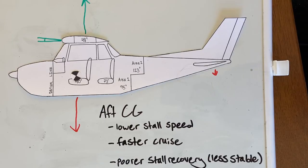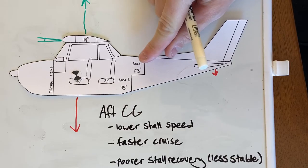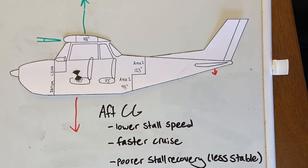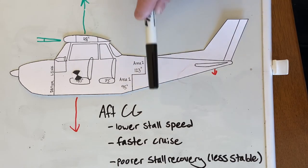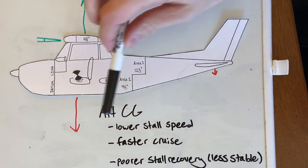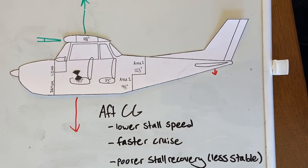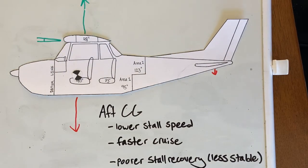As long as you keep the center of gravity within its limits, the airplane is still going to be stable — it's just not quite as stable as it would be with a further forward center of gravity. Having a far aft CG might be a little bit better because you are going to cruise a little bit faster, so it's a little bit more efficient, and the stall speed is lower. You just need to be aware that it won't recover from a stall quite as well, and the center of gravity does still need to be within its limits — we have to keep the center of gravity in front of the center of lift.